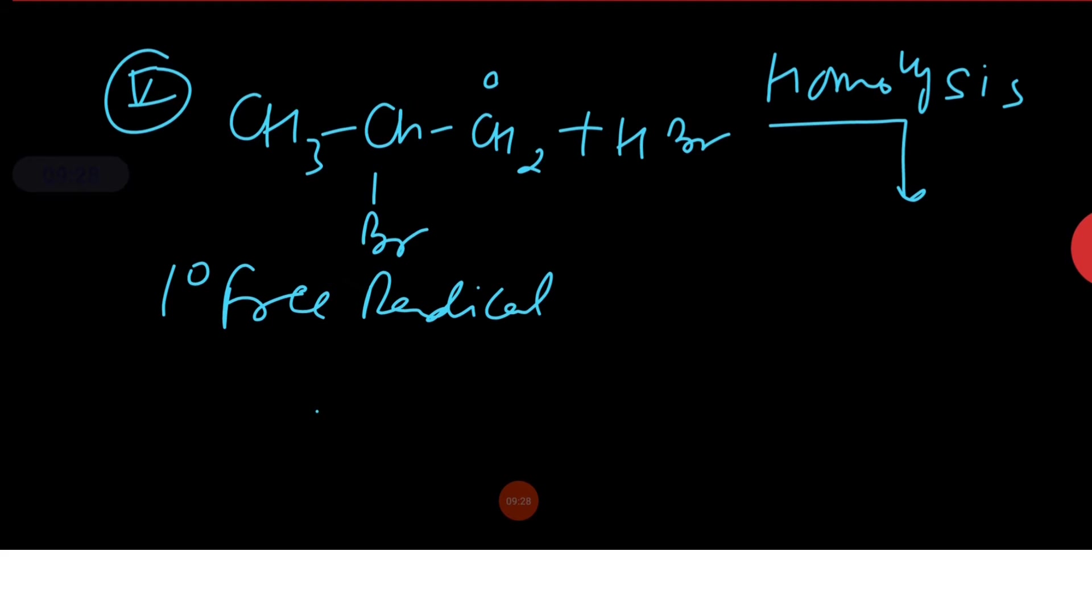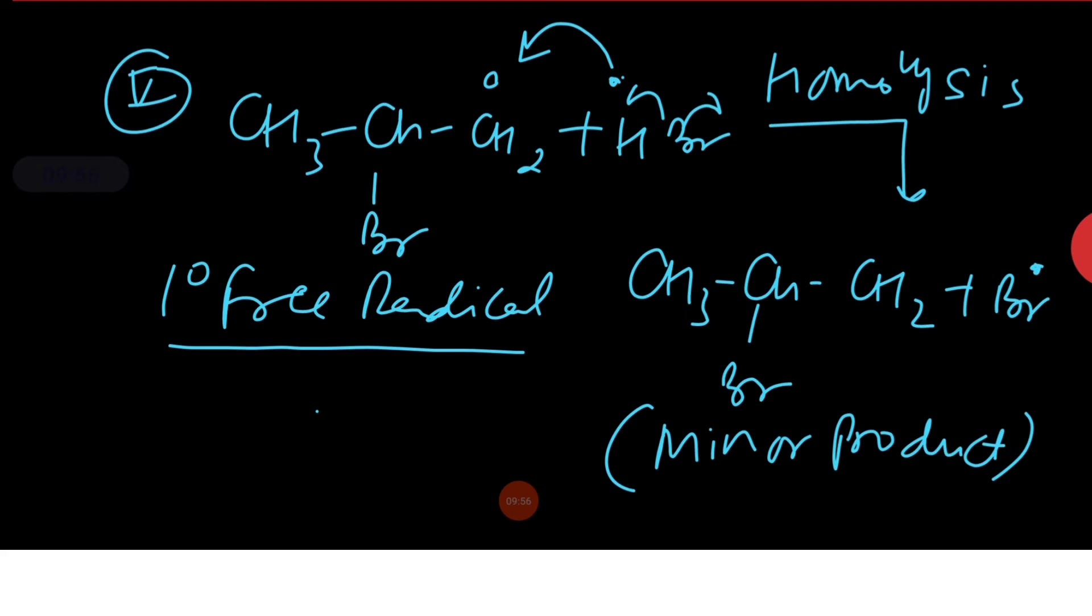On the other hand, less stable primary radical - HBr attacks on CH2 dot and forms 2-bromopropane as minor product along with bromine free radical.